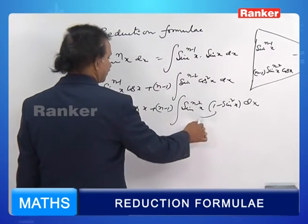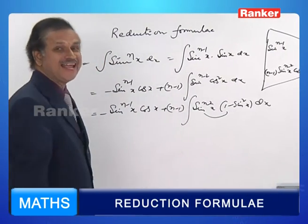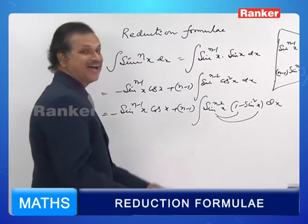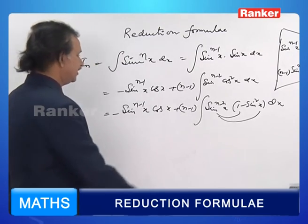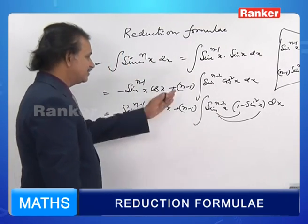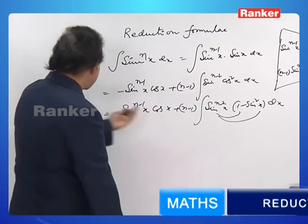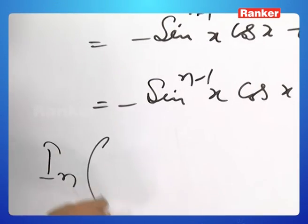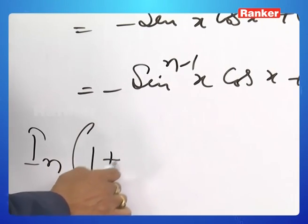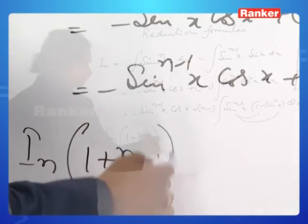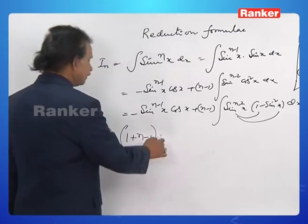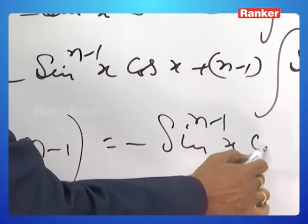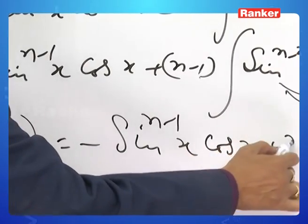This product gives I_{n-2}, and this product gives I_n. The sign is minus, so we have minus (n-1)·I_n. Bringing I_n to the left side as a common factor gives 1 plus (n-1), which equals n. So I_n·n equals minus sin^(n-1)x·cos x plus (n-2) into I_{n-2}.